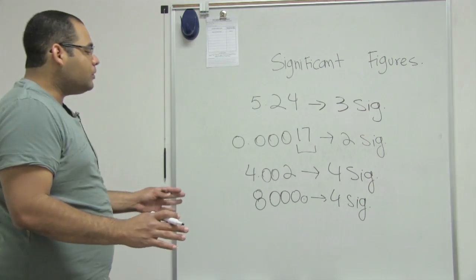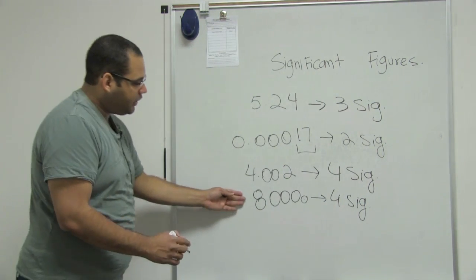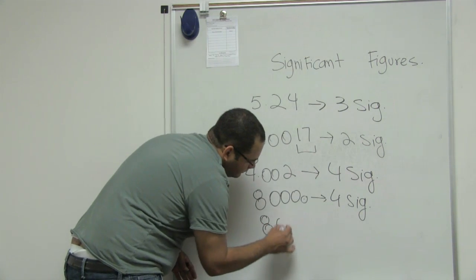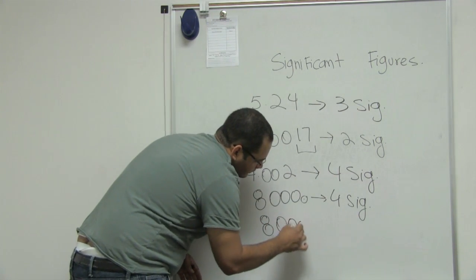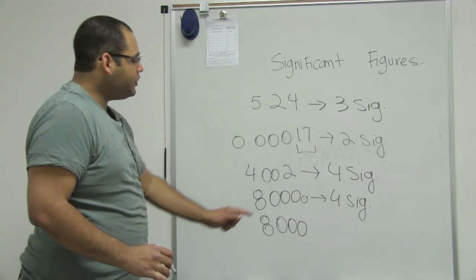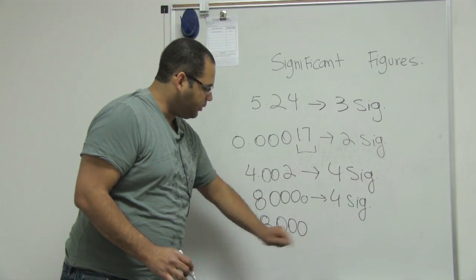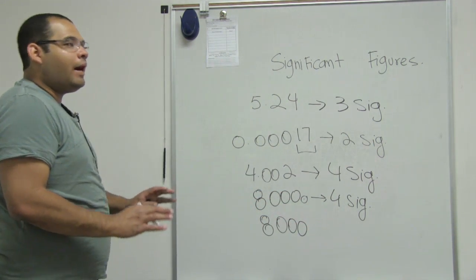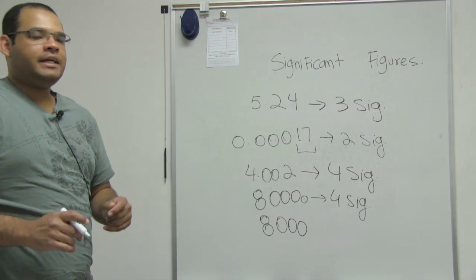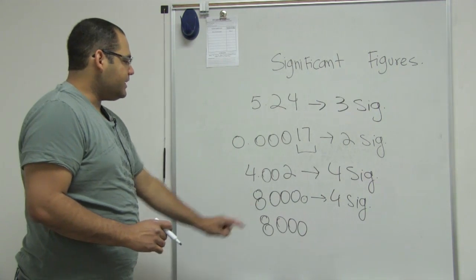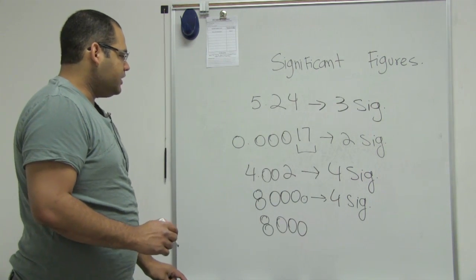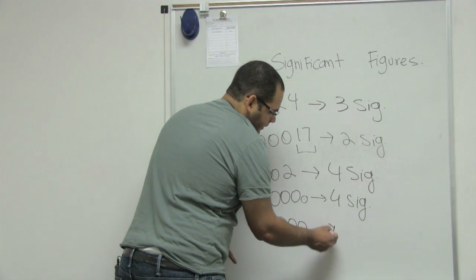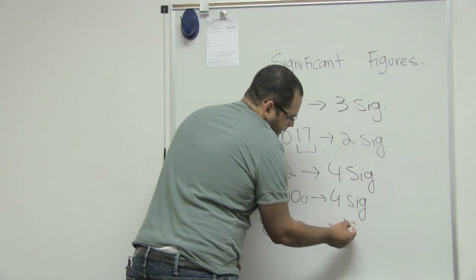The fourth rule, connected with the third, is that if I have the same number but now I do not have a decimal point placed at the end, I won't count the zeros as sig figs. So if I need to say how many sig figs I have here, I would say one sig fig.